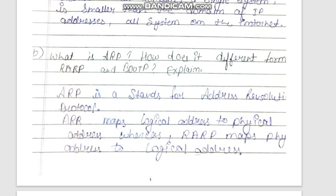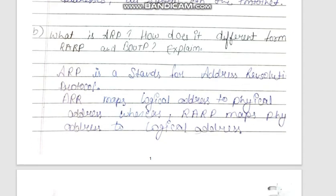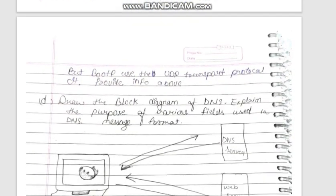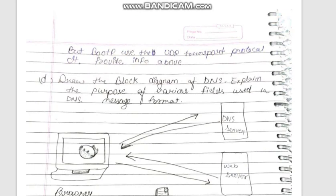ARP starts with a logical address and resolves it to a physical address. It uses the UDP transport protocol and provides information about the UDP and IP address.